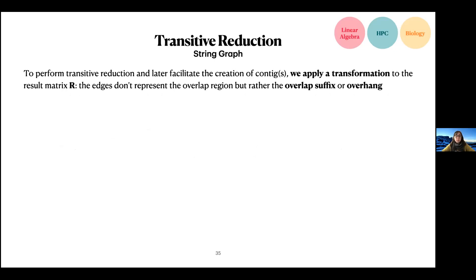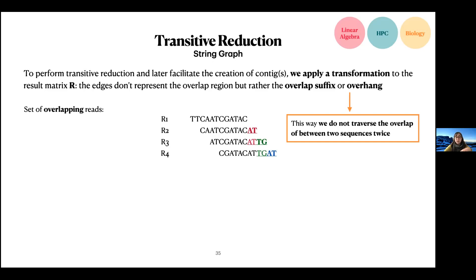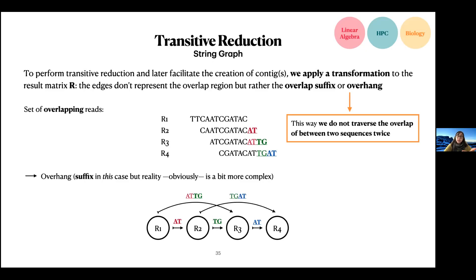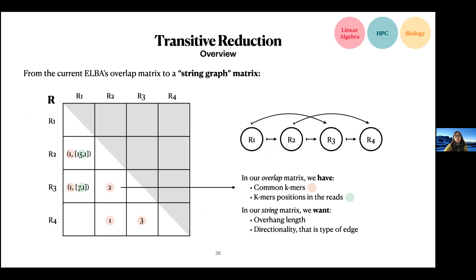Before the actual algorithm, there is a clarification on the representation. We apply a transformation: so far, non-zeros in the matrix represented the number of common k-mers and their positions, plus metadata from pairwise alignment such as alignment score and overlap length. We now move to a slightly different representation where an edge is no longer the full overlap between two reads, but only the suffix overlap — the overhang. When traversing the graph, we don't want to traverse the overlap region twice; we want to read R1 and jump directly to the next unique sequence. We also track the directionality of each edge, since DNA has two strands.